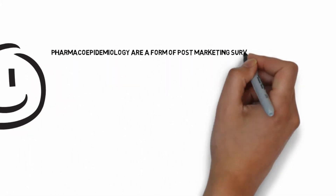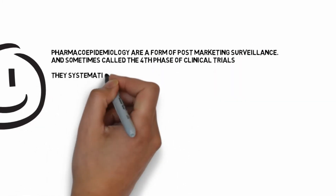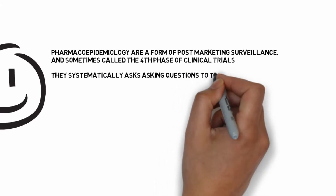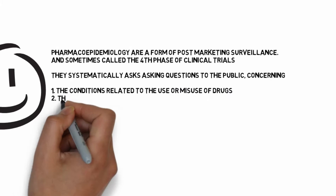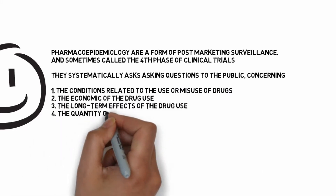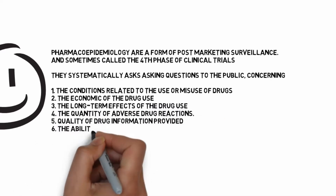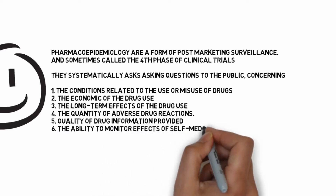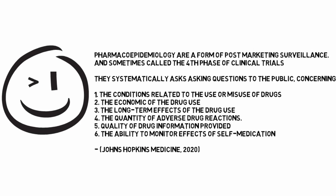Pharmacoepidemiology is a form of post-marketing surveillance, and sometimes called the fourth phase of clinical trials. So what is post-marketing surveillance? It is systematically asking questions to the public concerning: one, the conditions related to the use or misuse of drugs; two, the economics of drug use; three, the long-term effects of drug use; four, the quality of adverse drug reactions; five, the quality of drug information provided; and finally, the ability to monitor effects of self-medication.